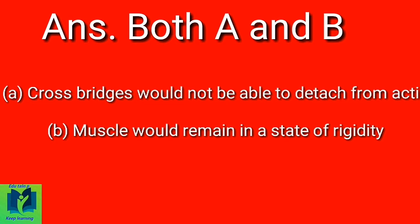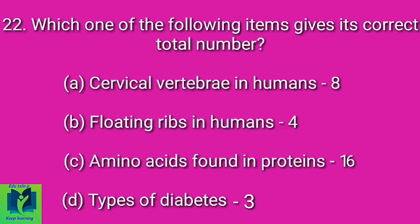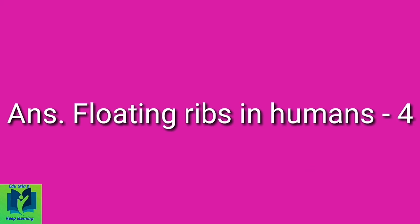Which one of the following items gives its correct total number? Option A: Cervical vertebrae in humans — 8. Option B: Floating ribs in humans — 4. Option C: Amino acids found in proteins — 16. Option D: Types of diabetes — 3. Answer: Floating ribs in humans — 4, that is two pairs.